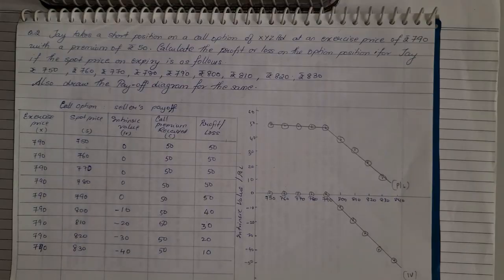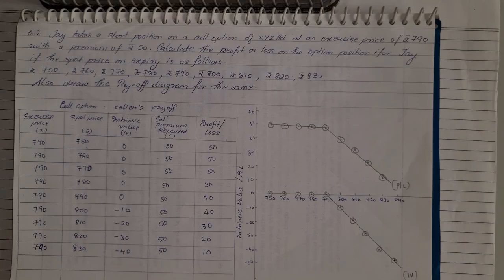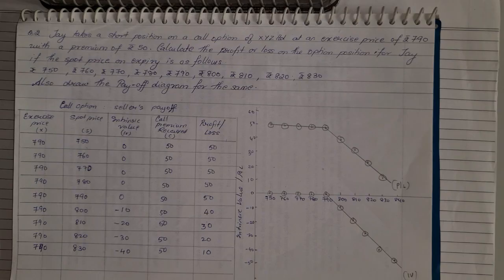This is how we need to solve sums based on call option seller's payoff. We have already solved sums based on buyer's payoff under call option — those who haven't viewed that video should go through it. With that, we conclude the call option seller's payoff problem sums. I hope everyone understood. Stay tuned for more videos which will now be based on put option, where again we will have buyer's payoff and seller's payoff. Thank you.